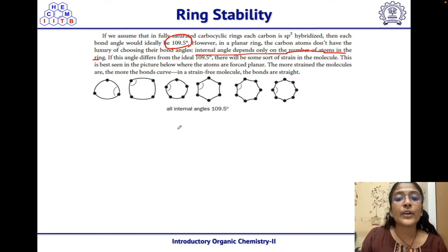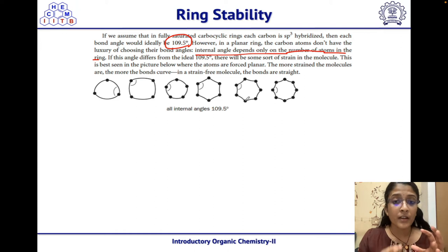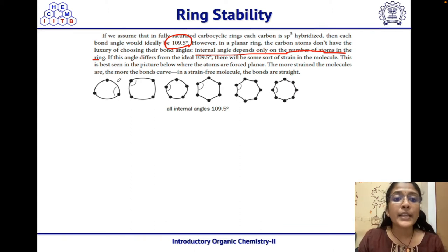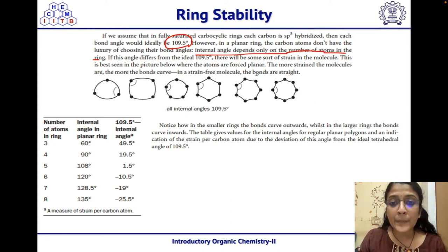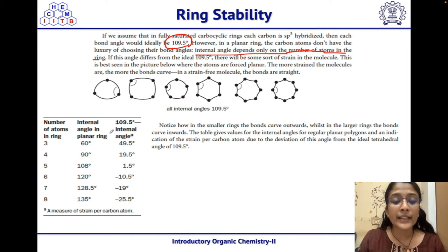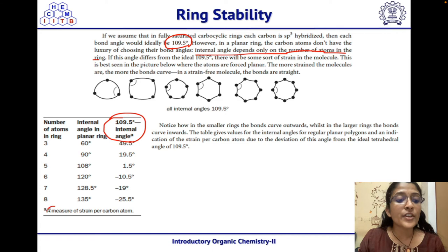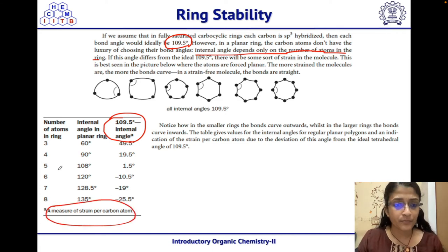Here, all internal angles are 109.5 degrees, whereas in strained systems the bonds are forced away from 109.5 degrees and we can see that many bonds are curved. In smaller rings the bonds curve outwards, while in larger rings like seven- and eight-membered rings the bonds curve inwards. This table gives the internal angle of a planar ring and the difference between that angle and the ideal tetrahedral angle of 109.5 degrees — this difference is the measure of strain per carbon atom.